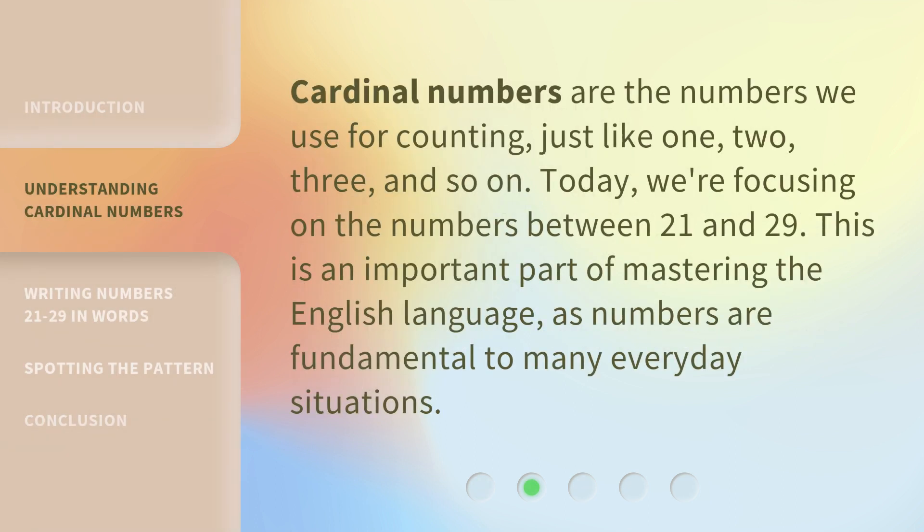Cardinal numbers are the numbers we use for counting, just like 1, 2, 3, and so on. Today we're focusing on the numbers between 21 and 29. This is an important part of mastering the English language, as numbers are fundamental to many everyday situations.